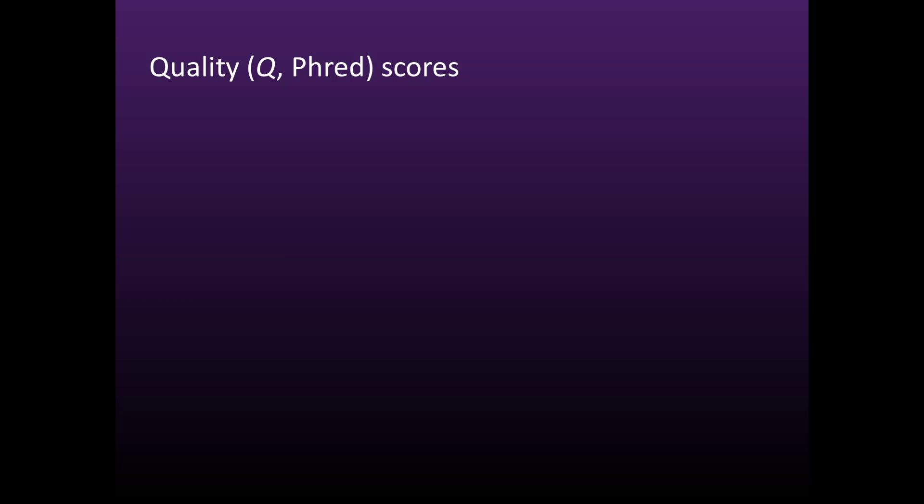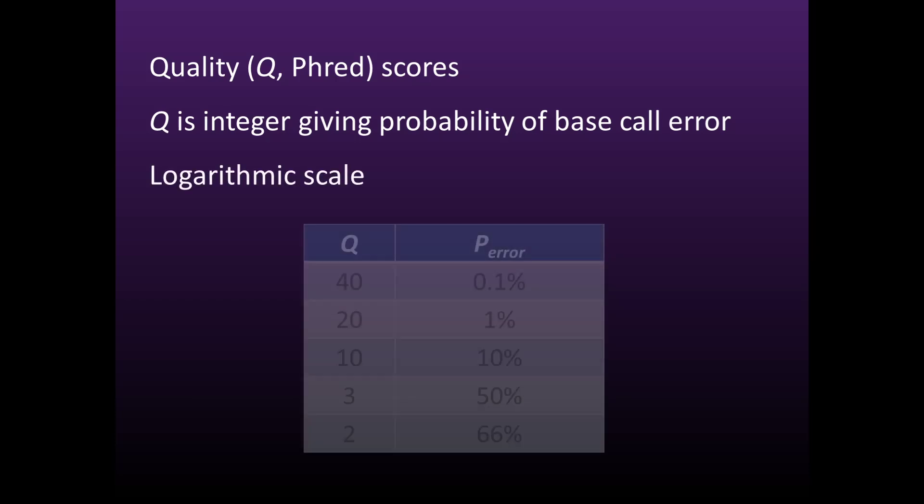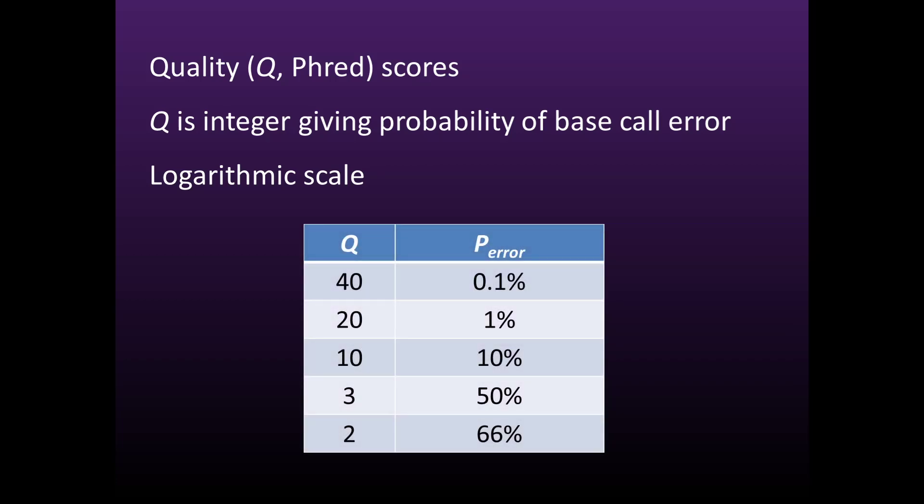Illumina generates reads in FASTQ format, which includes a Q-score for each base. Q is an integer value representing the probability of a base call error, defined on a logarithmic scale. Here are some examples: Q-20 means a 1% error probability, while Q-2 means the base only has a one-third probability of being correct.